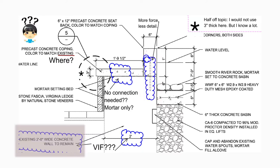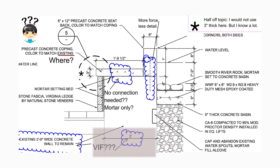The drawing shows an existing two-foot dimension that's going to remain — but there's no VIF, 'verify in field.' Most architects say VIF on everything, but here it's missing. Most pre-casters would make the piece at two feet, and if it doesn't fit, there's a big fight. You'll end up spending two hours in construction administration instead of 20 seconds to add VIF. The stone pin seemed like overkill; this missing verification seems like underkill.